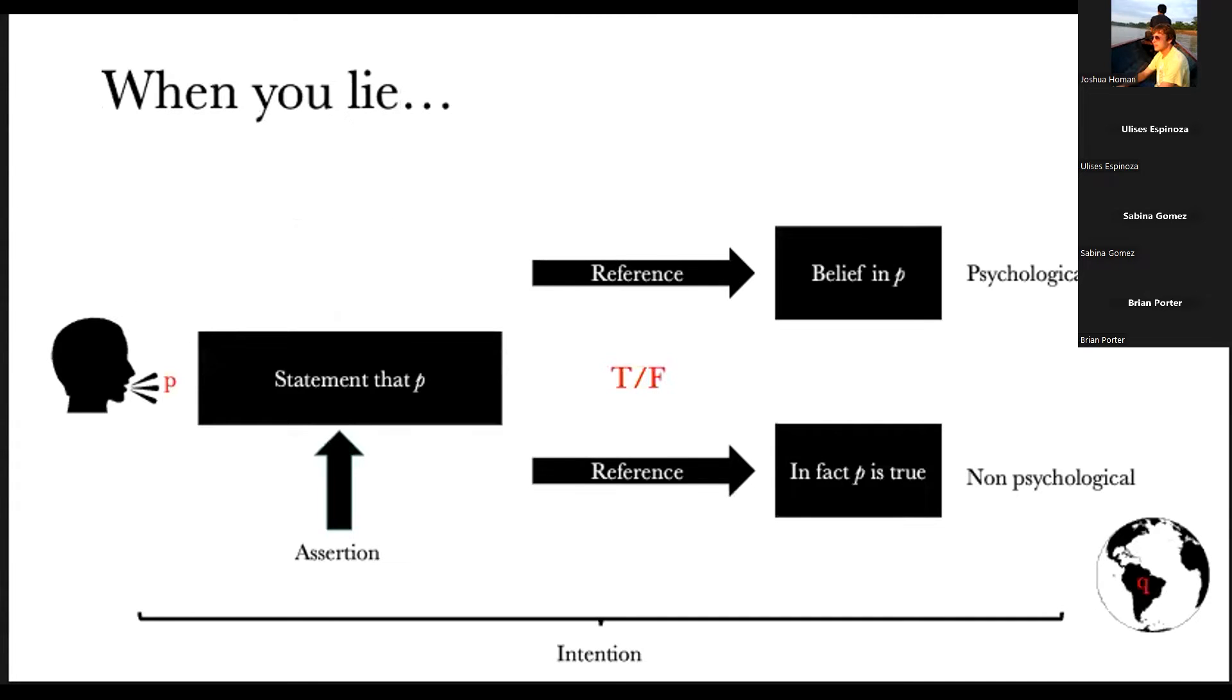So when you lie, you can think about lying this way: someone produces a statement, to be an assertion usually, it's an assertion. This assertion creates two references. One is psychological and refers to beliefs. The other one is non-psychological because it's a reference to the facts. So in this example, we have a statement p, and the reference, both for beliefs and for facts, can be p or can be something else q. All these also is embedded in the intentions of the speaker.